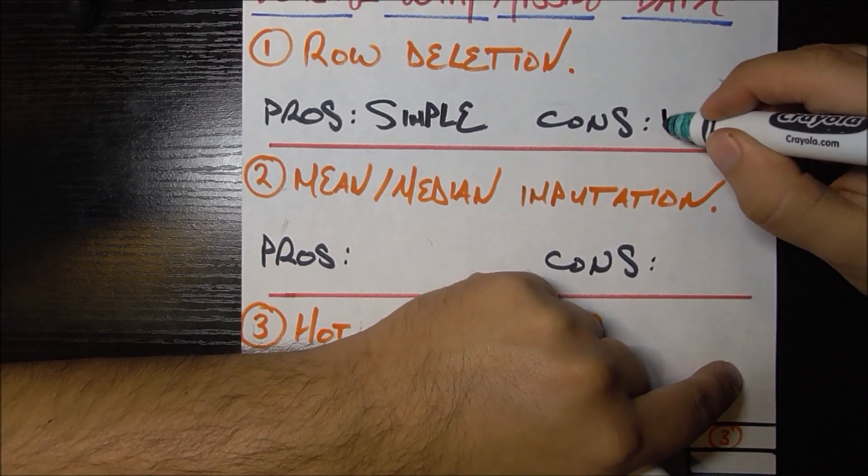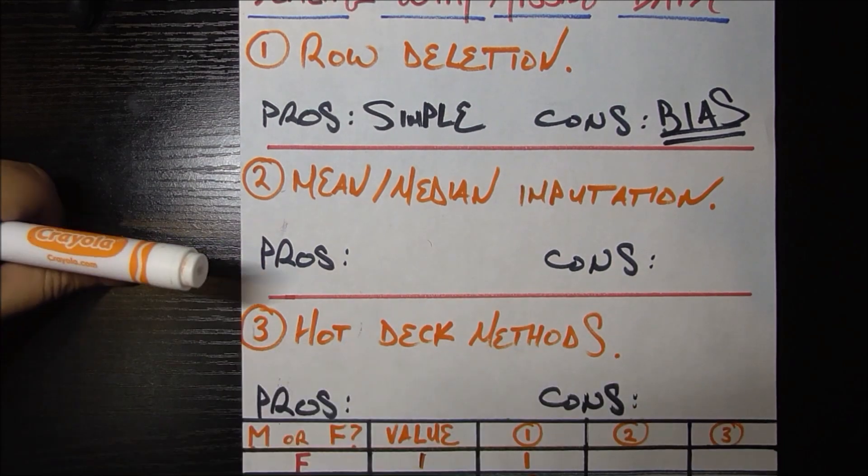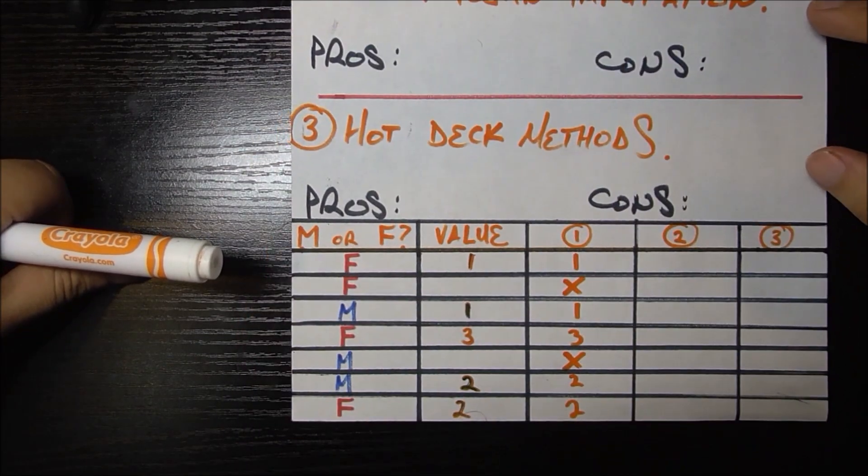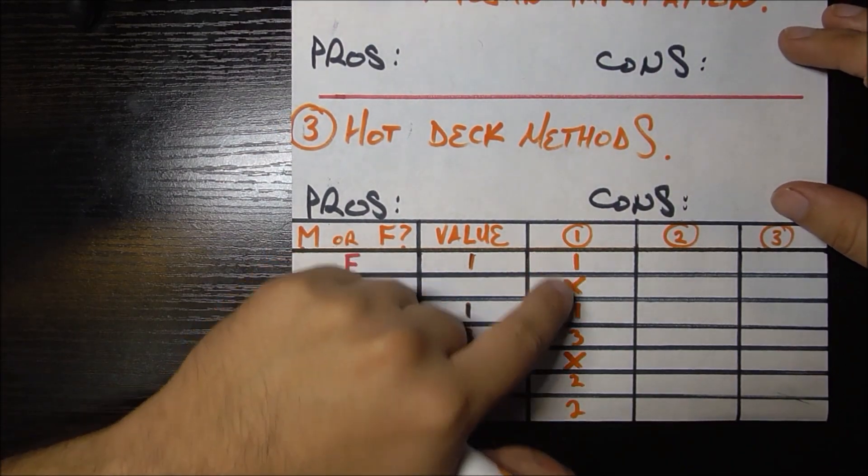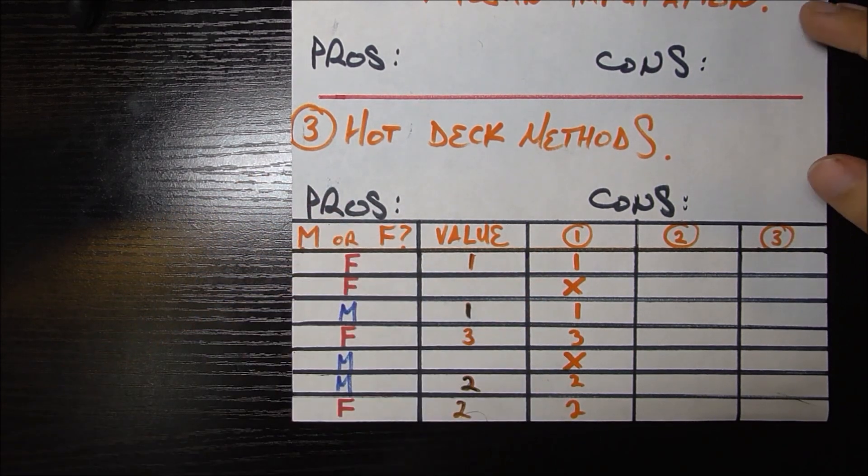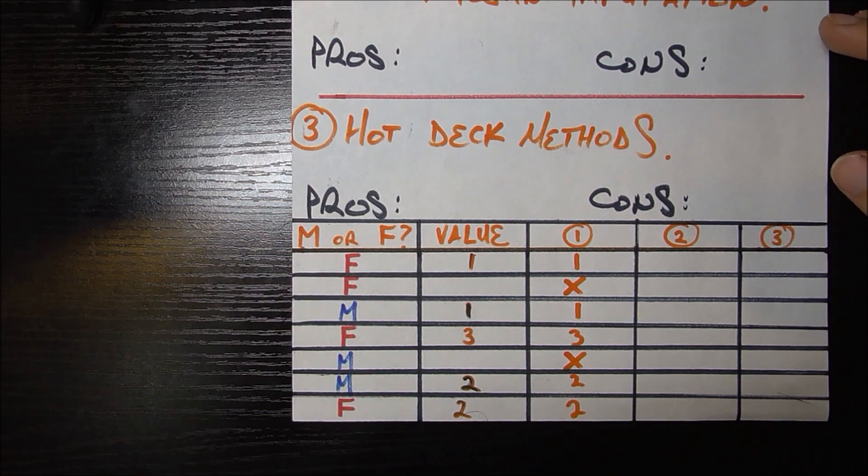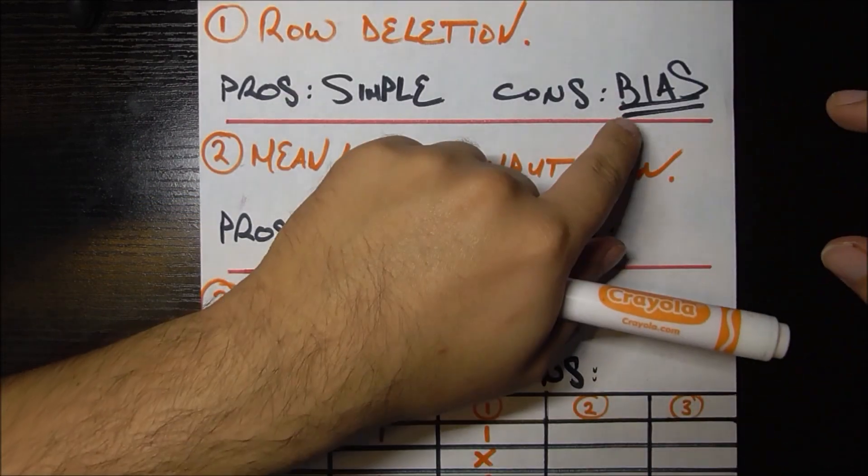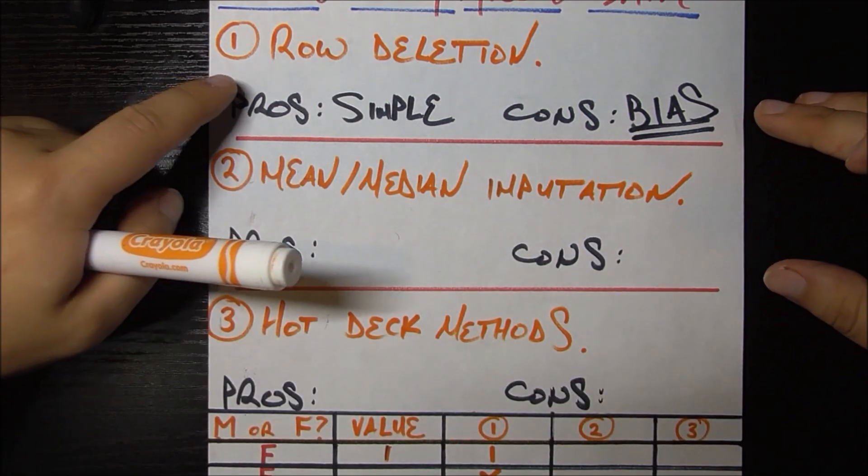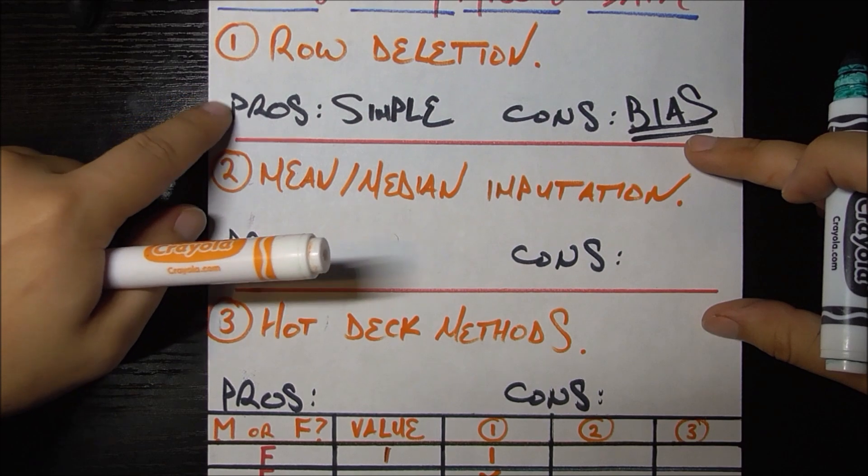So the con is that it's probably in most cases going to introduce bias in our dataset. And kind of an easy way to think about bias is just that the new dataset we have, which is just this 1, 1, 3, 2, and 2, is no longer representative of the real data that we want to collect from our neighborhood. So that's one of the biggest bias and that's why you have to be really careful when you're using row deletion. Make sure it's really what you want to do. You're probably not going to want to do this one.